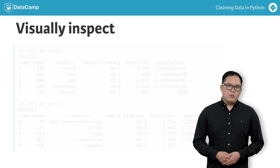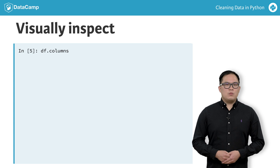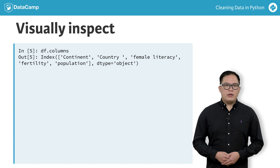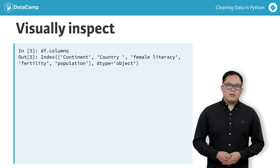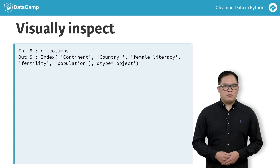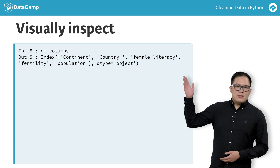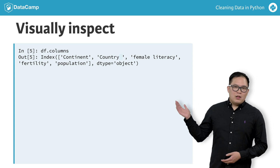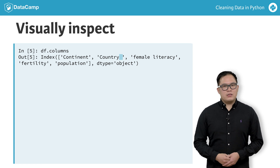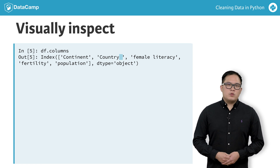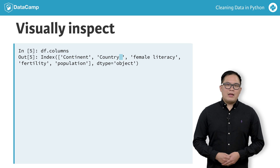If you have a lot of columns, calling the columns attribute of our data frame will return an index of column names. You can see that the Country column actually has a space at the end of it — this was practically invisible when we looked at the head and tail of our data.